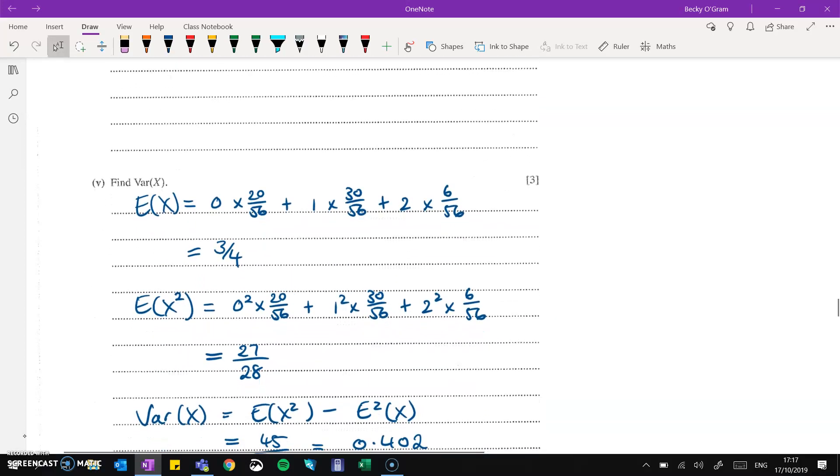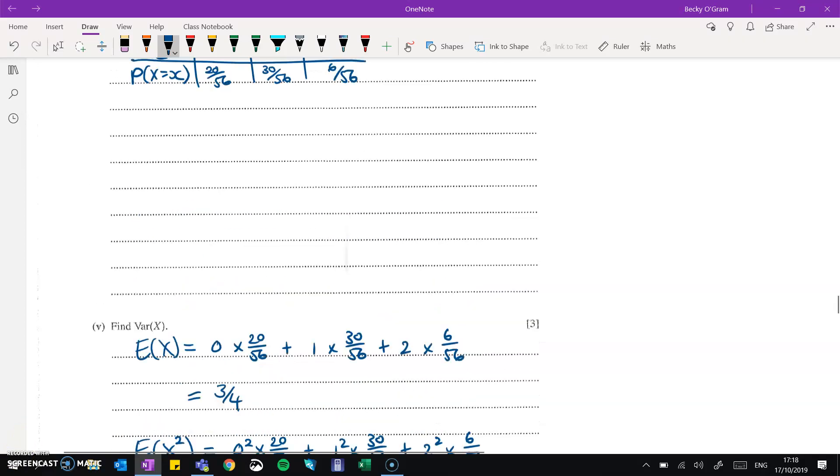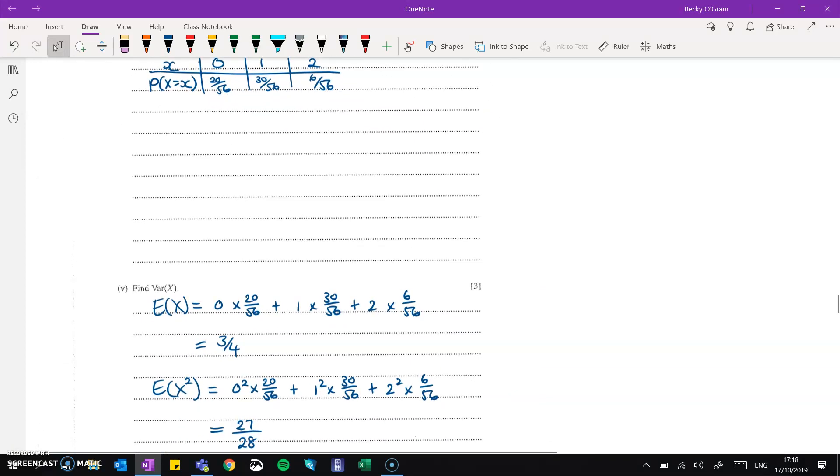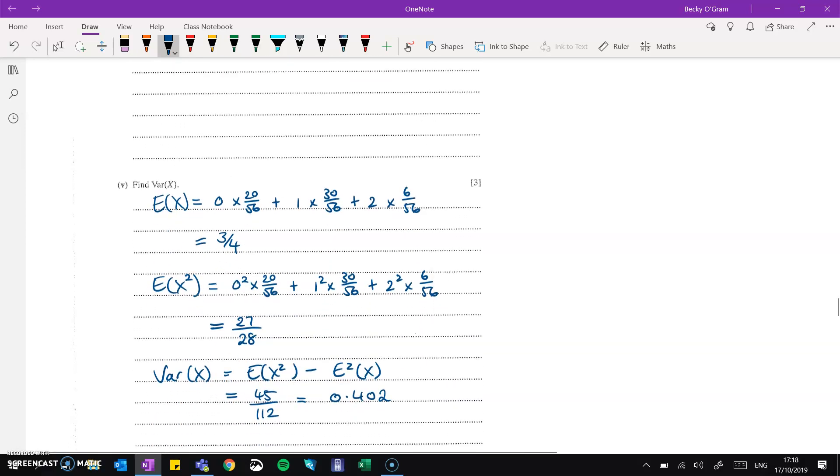The variance of x is to do the expectation of x squared minus the expectation of x all squared. So we need each of those. Now you use the probability distribution table that you just worked out in the first part. And you're going to do x times its probability and add them all together like so. And then for e of x squared, we square x and times its probability and add them all up. Then the variance will be e of x squared minus e squared of x. And that comes to 45 over 112, or if you did it in decimal form, 0.402.